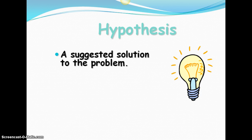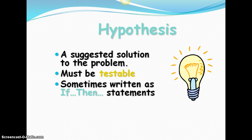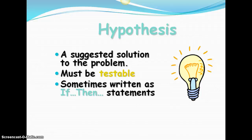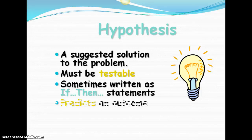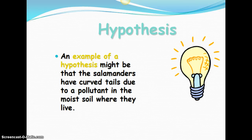So a hypothesis is a suggested solution to the problem. We usually write this as an if-then statement. It is also something that must be testable. So you have to be able to test what you are stating. If I do this, then this will happen. It needs to be something that you can actually physically test. So it will help to predict an outcome. Our example of the hypothesis might be that the salamanders have curved tails due to a pollutant in the moist soil where they live. Now this could be written a little bit differently. We could say, if a salamander is exposed to a pollutant, then they will have a curved tail. And that would be our if-then statement.